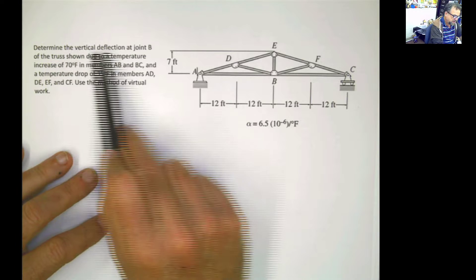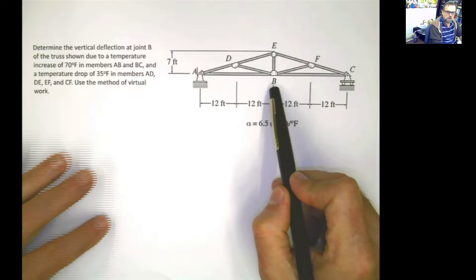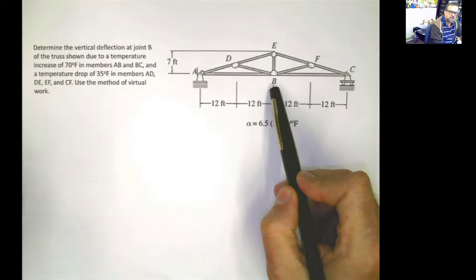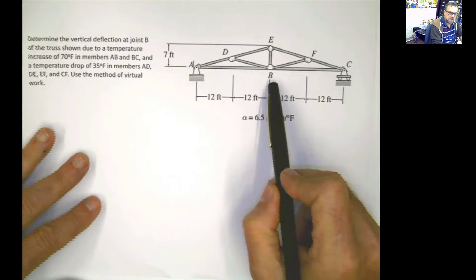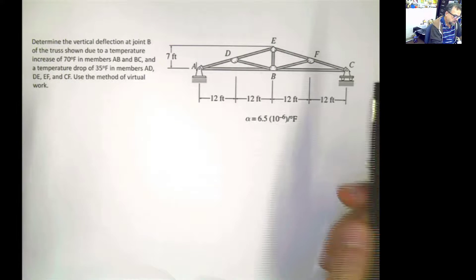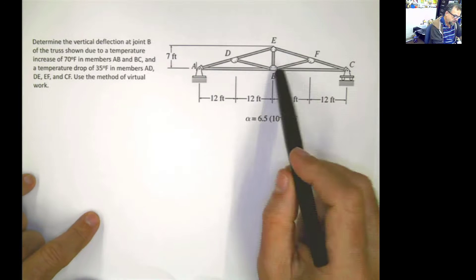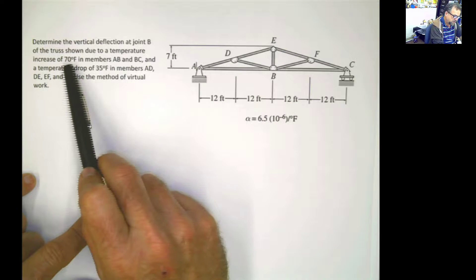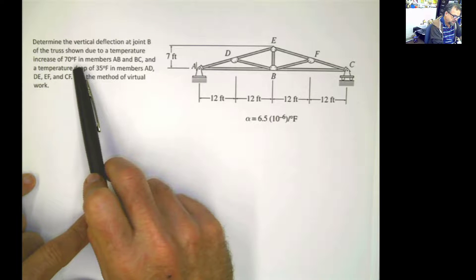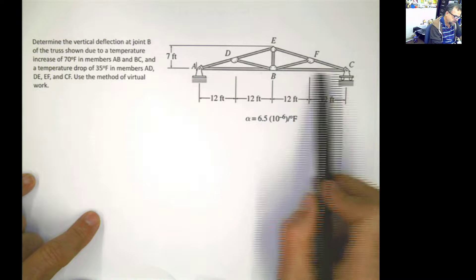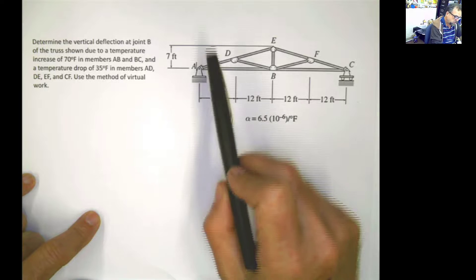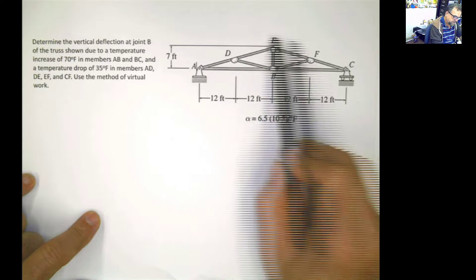First, it says determine the vertical deflection at joint B. And you know what to do with vertical deflection, right? You just put a virtual load over there and do statics in the virtual structure. But the other part is it says that vertical deflection is due to a temperature increase of 70 Fahrenheit in members AB and BC, and a temperature drop on these members here.